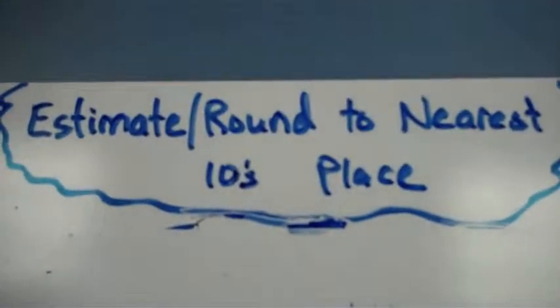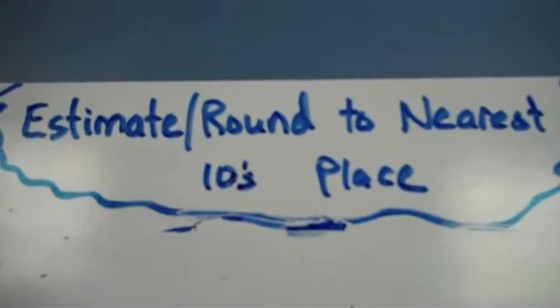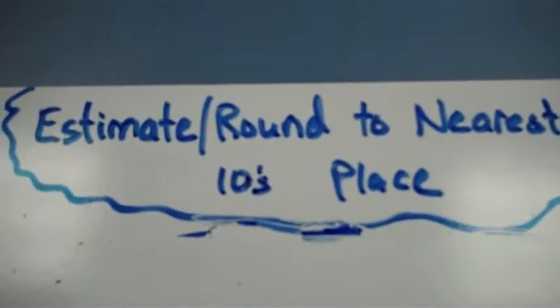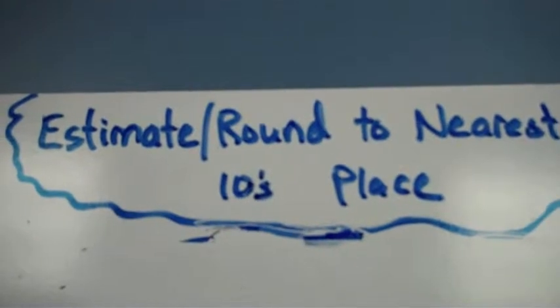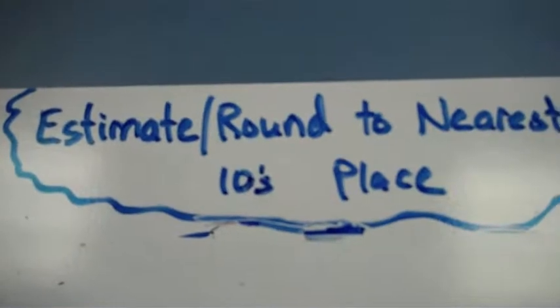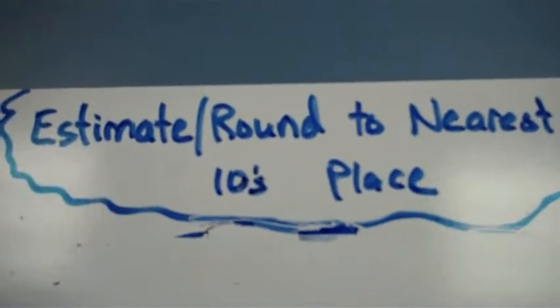Today we're going to be estimating or rounding to the nearest tens place. When you have many numbers that you're trying to add quickly or subtract, it's easier to do it when you have nice round numbers with lots of zeros in them. That way you don't need to focus on adding so many digits together.